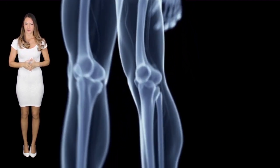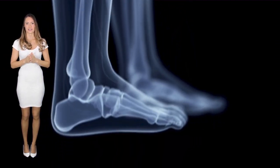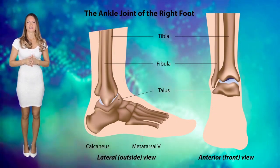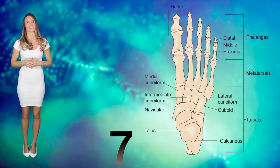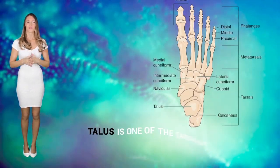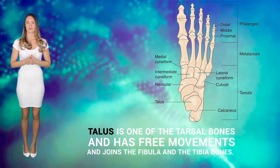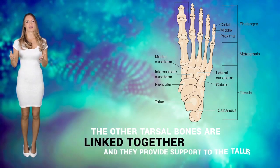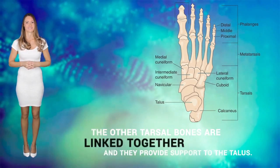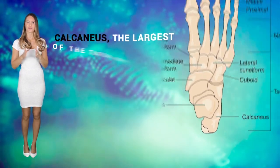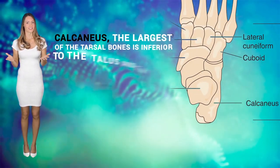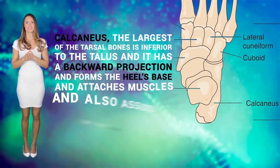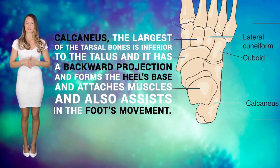Finally, the foot is the last lower limb bone and consists of the instep, the toes, and the ankles. The ankle is sometimes referred to as the tarsus and has seven bones called the tarsal bones. Talus is one of the tarsal bones, has free movements, and joins the fibula and tibia bones. The other tarsal bones are linked together and they provide support to the talus. The calcaneus, the largest of the tarsal bones, is inferior to the talus, has a backward projection, and forms the heel's base, attaching to muscles and assisting in the foot's movements.